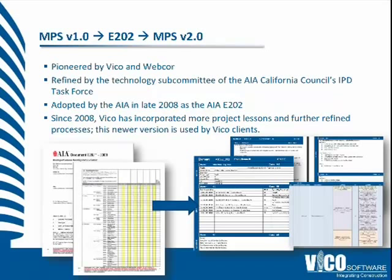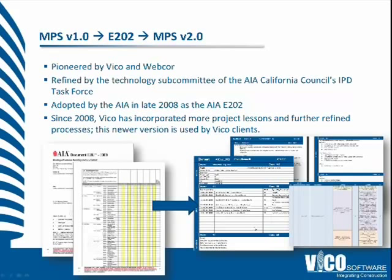We first started this a number of years ago and pioneered the MPS version 1.0. It's something that VECO and WebCore worked on and spent a lot of time refining with the AIA, and essentially that was a document adopted in 2008 as the AIA E-202. Some of you may be familiar with this. Since then we've incorporated many different changes and lessons learned from projects, and further refined the process. This version 2.0 has a lot more detail, a lot more terminology that has to be described, and also a lot more specification.